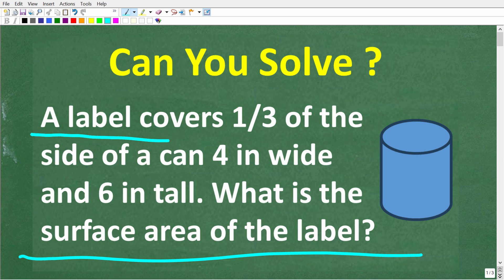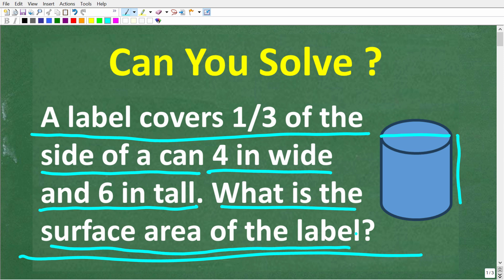So a label covers one third of the side of a can, four inches wide and six inches tall. So here is our can and it's four inches wide and six inches tall. And the question is, what is the surface area of the label? And of course this label covers one third of the side of the can.